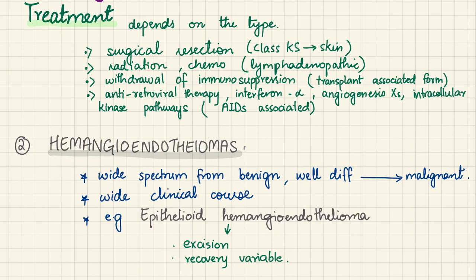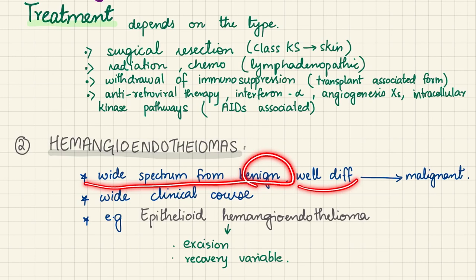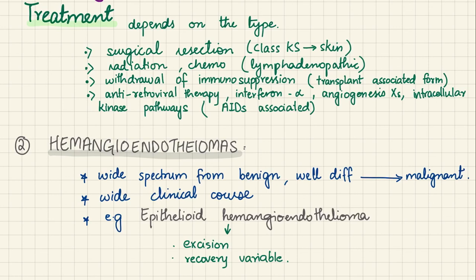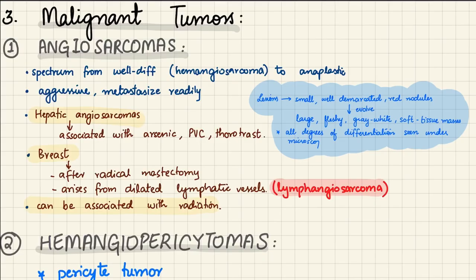The second type of intermediate grade vascular tumors are hemangioendotheliomas. They have a wide spectrum from benign well-differentiated to malignant forms. They are very rare and have a wide clinical course. One example is epithelioid hemangioendothelioma, which is a rare cancer.